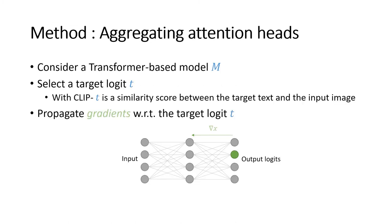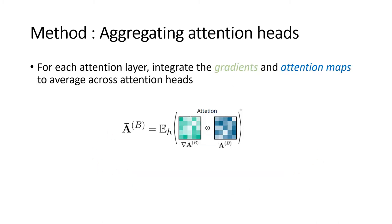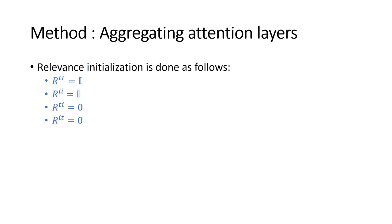Let's describe how we solve the first problem of aggregating attention heads. We consider a transformer-based model M and select the target logit T — for example, with CLIP, T is a similarity score between a target text and an input image. We propagate gradients with respect to T throughout the entire network. For each attention head, we have both the gradients and the attention maps, so we multiply them element-wise, remove negative contributions as done by previous papers, and then average across the attention heads to get one relevancy map per attention layer.